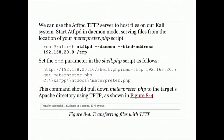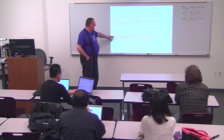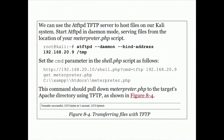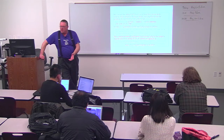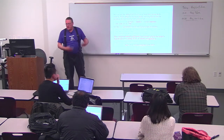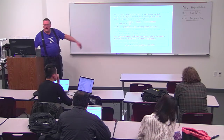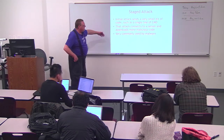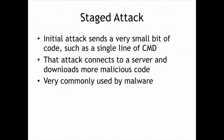TFTP is intended to be used only on closed networks because it's fantastically insecure - no authentication at all. It's commonly used to upload firmware into routers, switches, and IP phones. You can run TFTP on Metasploit and then use the TFTP command line command in Windows: TFTP IP-address get filename, and it will download it. That is a simple way to have a command line method to move a file up to a server. Then you make a staged attack - you send something small, like a single line of CMD, that when run will download more. This is typically how malware really works.